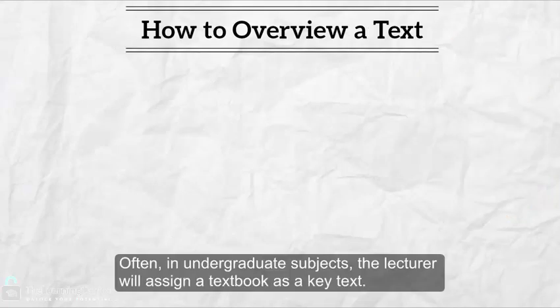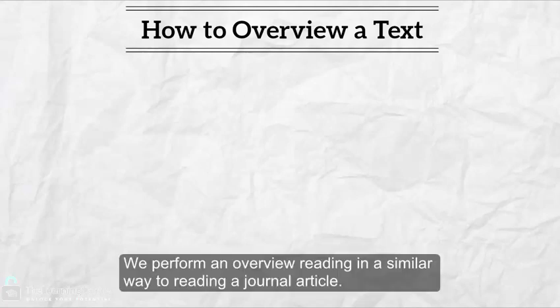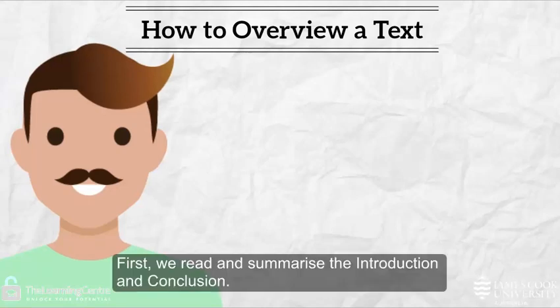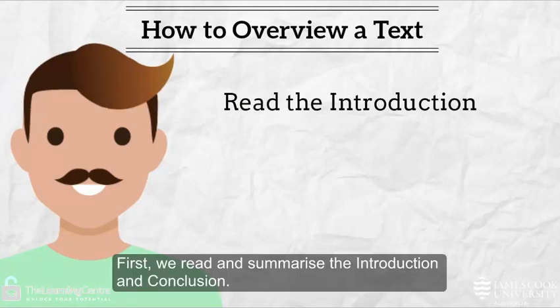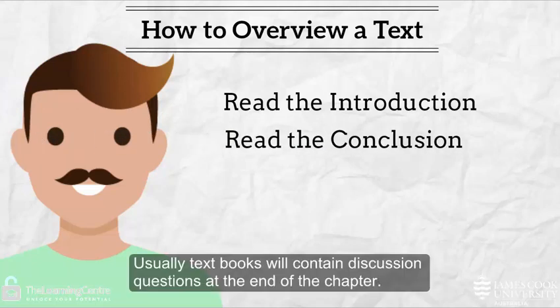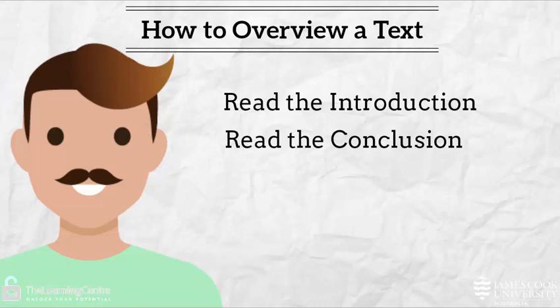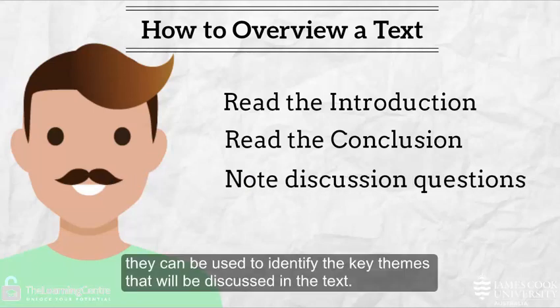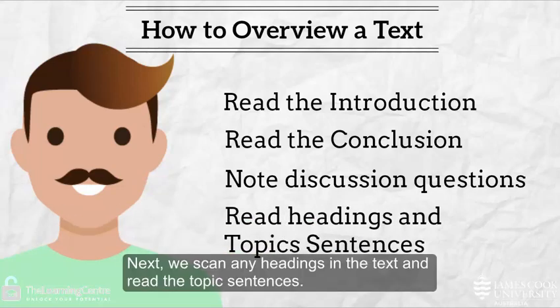Often in undergraduate subjects, the lecturer will assign a textbook as a key text. We perform an overview reading in a similar way to reading a journal article. First, we read and summarize the introduction and conclusion. Usually, textbooks will contain discussion questions at the end of the chapter. If we read these first, they can be used to identify the key themes that will be discussed in the text. Next, we scan any headings in the text and read the topic sentences.